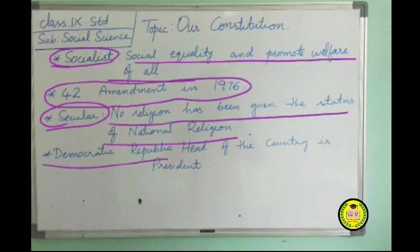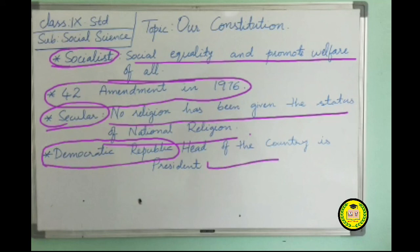Next is Democratic Republic. Securing the happiness of everyone is the responsibility of a government in a democracy. Problems are solved through decisions and elections, which are held every five years through universal adult franchise. Universal adult franchise means adults above 18 years of age can vote and elect their representatives. The fact that our head of state, the President of India, is elected for a period of five years proves that our country is a republic.